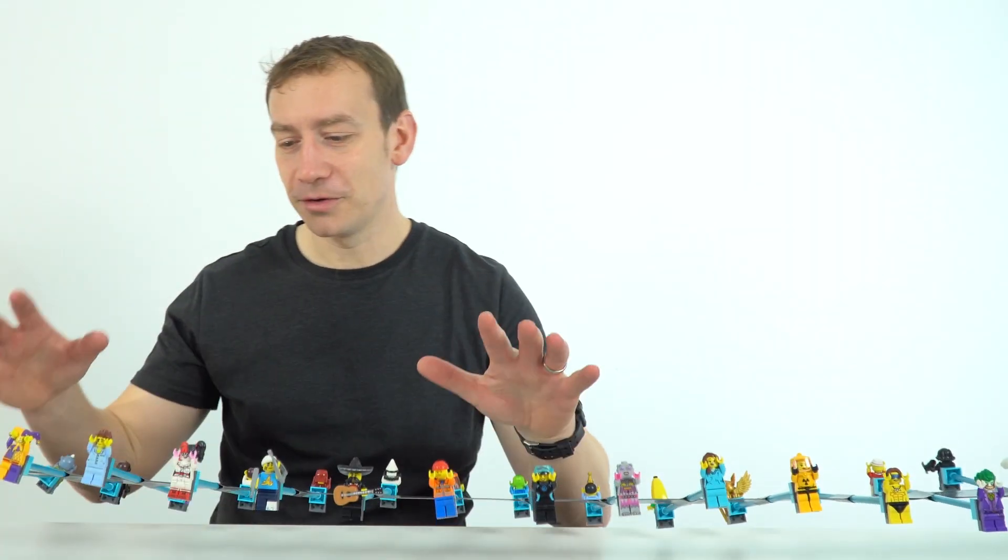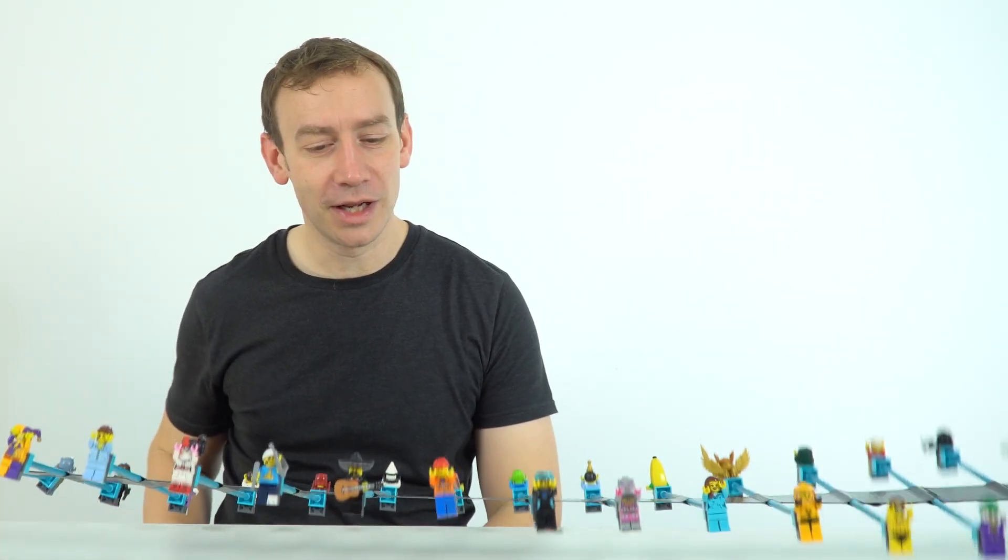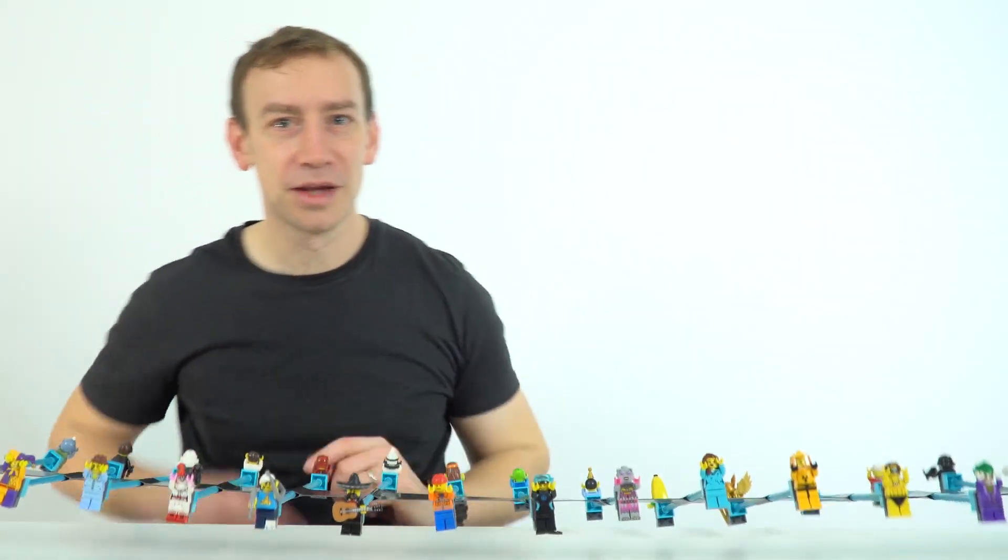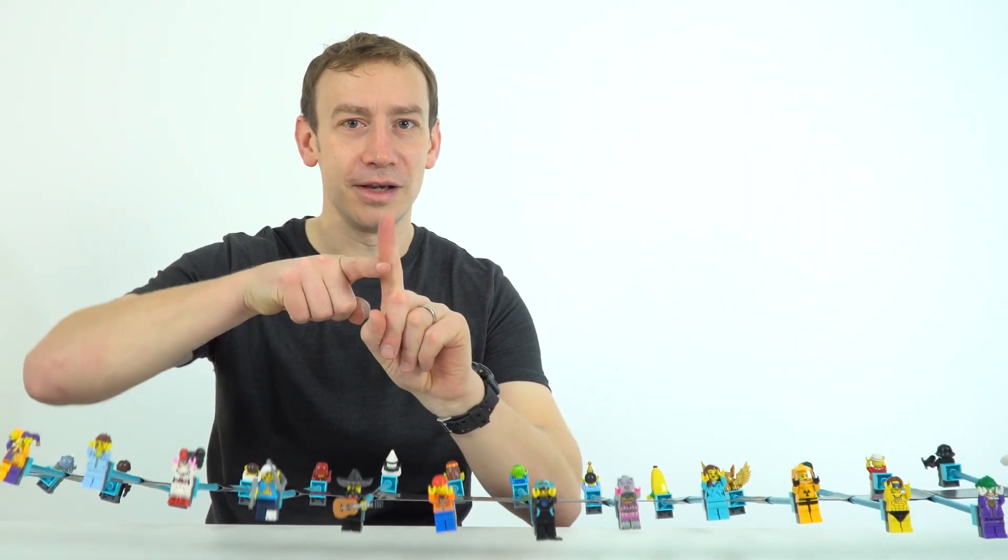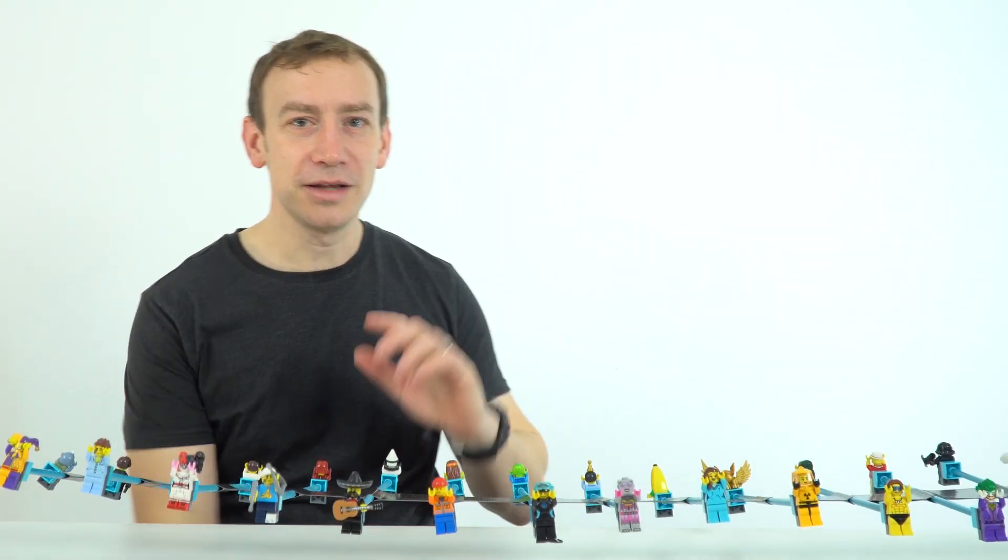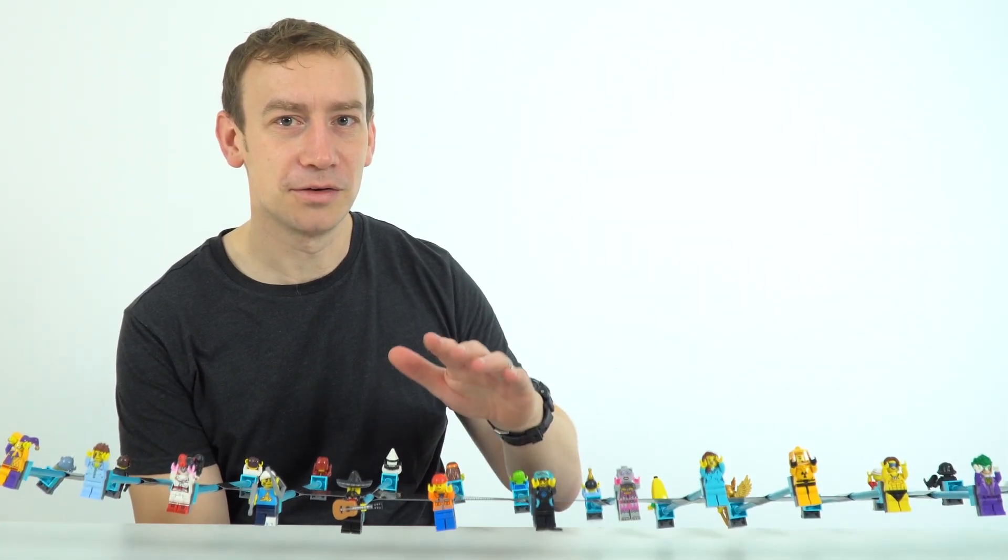The other thing about this wave here you'll notice is that as energy is transferred from one end to the other all of the people are just moving up and down. So they're moving at 90 degrees to the direction that the energy is being transferred. And this is what we call a transverse wave.